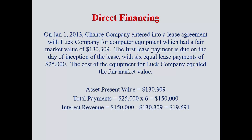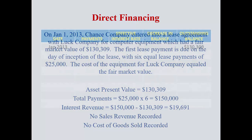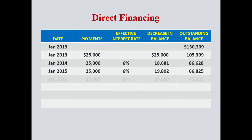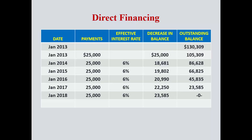Looking at the numbers: the asset present value and total payments — the difference represents interest. No sales revenue is recorded, and no cost of goods sold is recorded with a direct financing lease. We can look at the numbers in an amortization table at 6% interest. The difference between $133,309 and $150,000 represents interest revenue for the lessor and interest expense for the lessee.